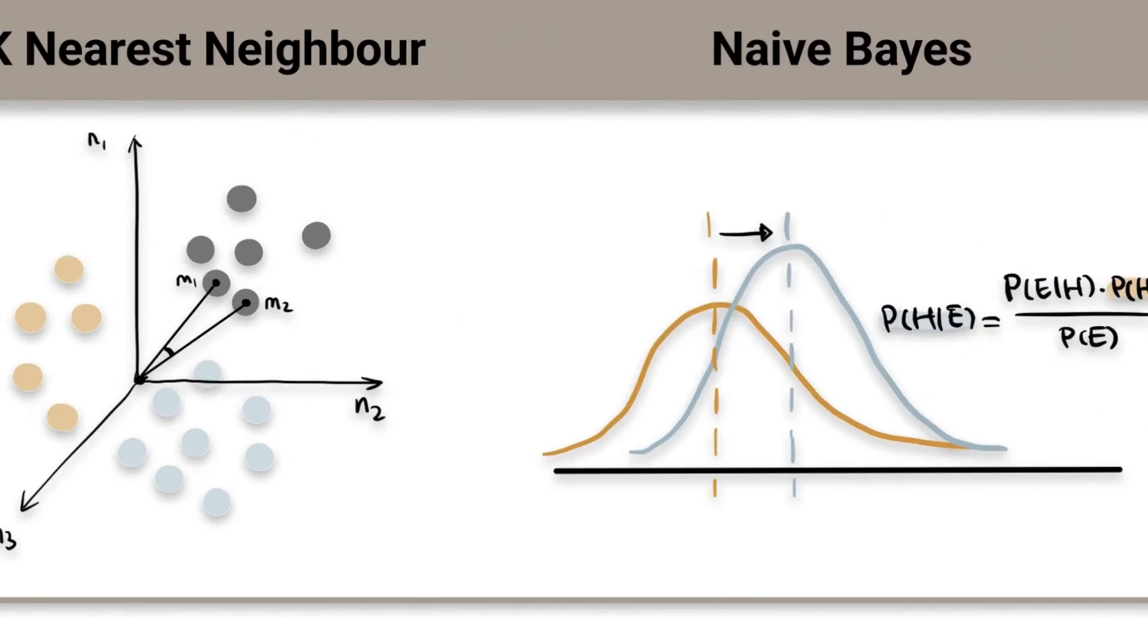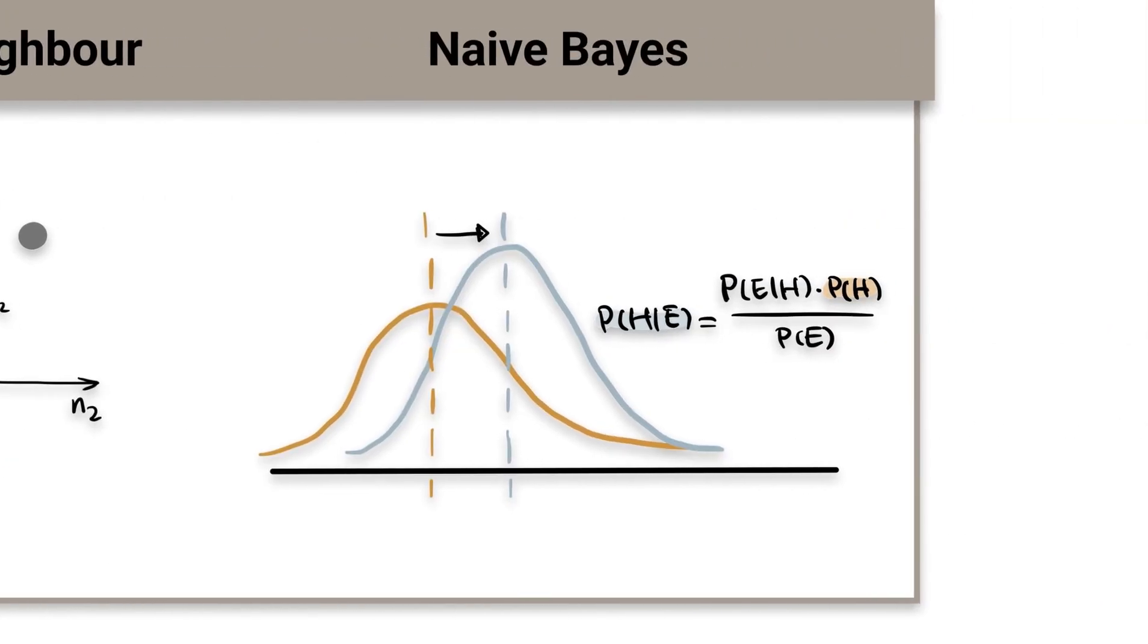Naive Bayes is based on Bayes' theorem, an approach to calculate conditional probability based on prior knowledge, and the naive assumption that each feature is independent to each other. The biggest advantage of Naive Bayes is that while most machine learning algorithms rely on large amounts of training data, it performs relatively well even when the training data size is small. Gaussian Naive Bayes is a type of Naive Bayes classifier that follows the normal distribution.